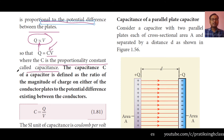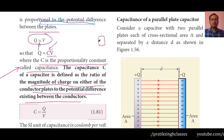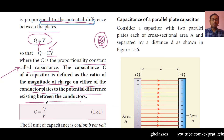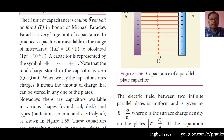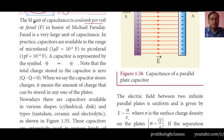The capacitance of a capacitor is defined as the ratio of the magnitude of charge on either conductor plate to the potential difference between the conductors. This means: take one plate, find the amount of charge on it, and divide by the potential difference of the battery — that gives the capacitance. The SI unit of capacitance is Coulomb per Volt, also called the Farad, named in honor of Michael Faraday.